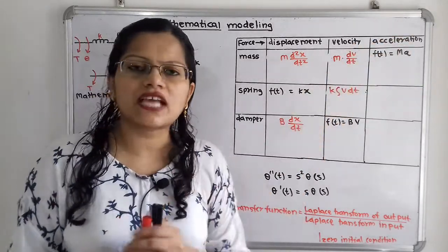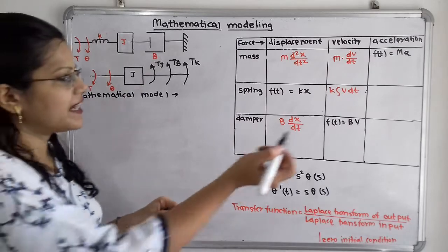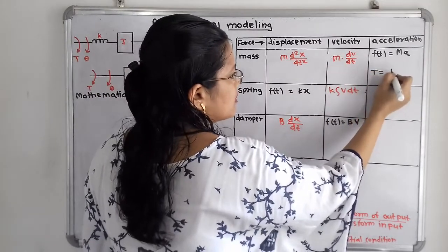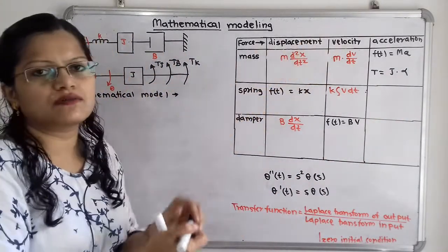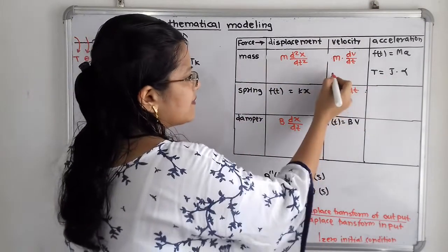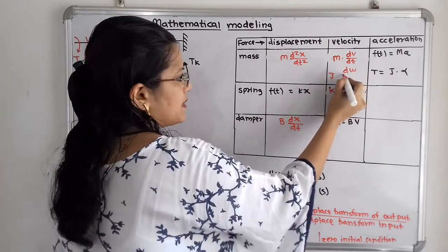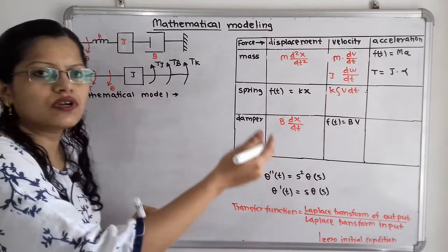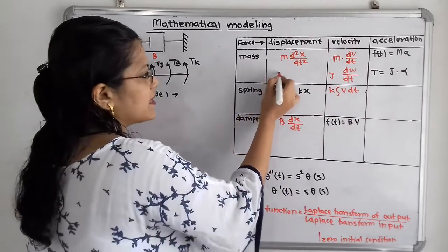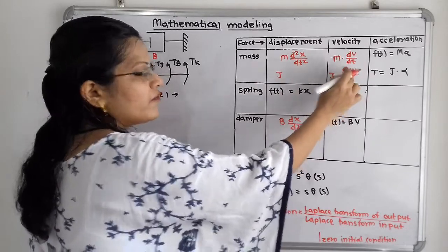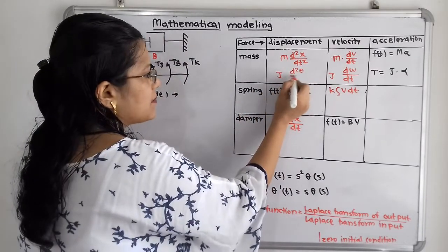We will convert this in terms of velocity and displacement. Angular acceleration alpha is d-omega by dt, and omega is the angular velocity. Writing omega in terms of displacement theta: omega equals d-theta by dt. So the torque due to mass becomes J times d-squared-theta by dt-squared.